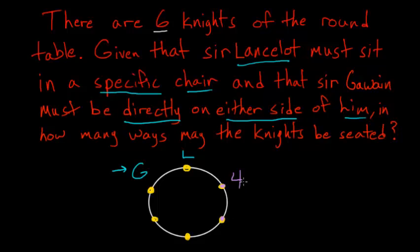Now for this next spot, since one is sitting here, there's only three left to sit here. So there are three choices there. Now for this spot, two knights are already seated, and there are only two left. So there are two possibilities for this slot. And then only one knight is left for this one.